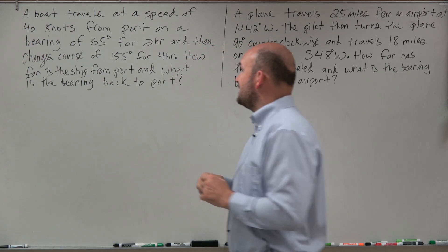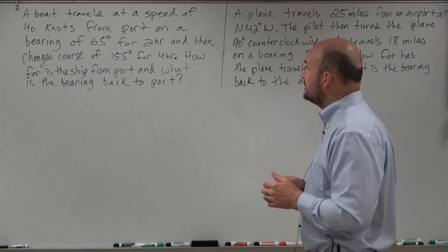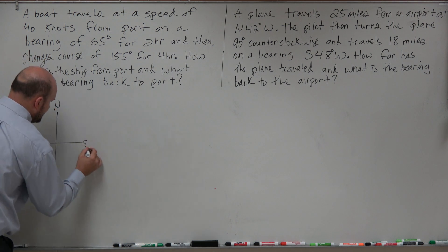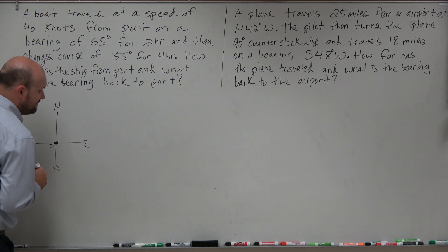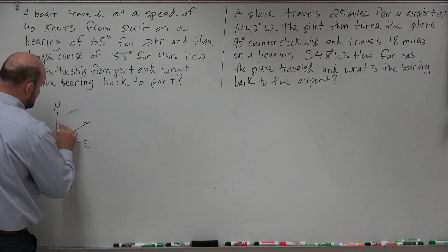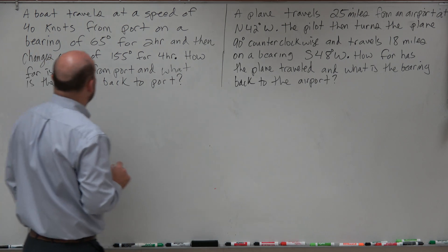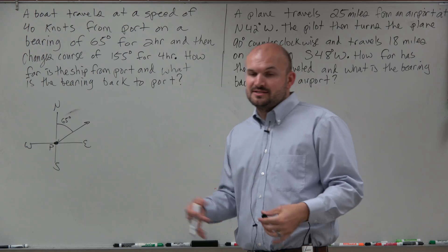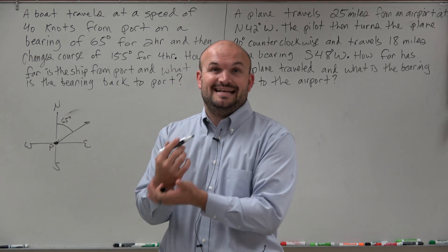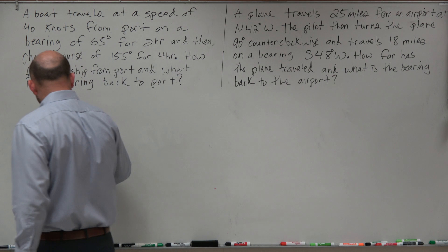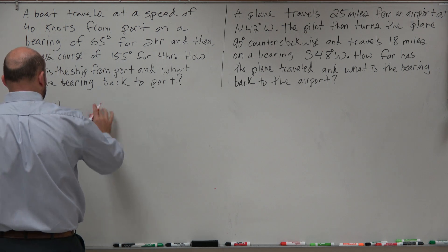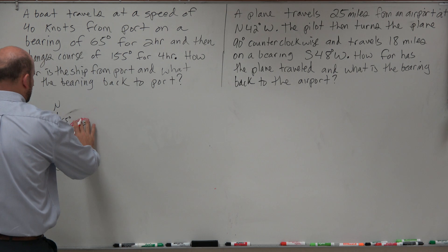In this example, a boat travels at a speed of 40 knots from port on a bearing of 65 degrees. I'll represent my bearing of 65 degrees with north, east, south, west, marking my first point P for port. Going at 65 degrees, traveling for two hours at 40 knots — knots being nautical miles per hour — means you've traveled 80 nautical miles. I'll write that in as 80, representing my distance.